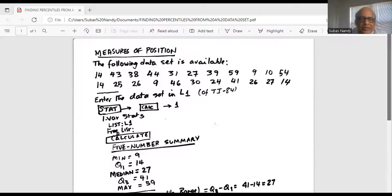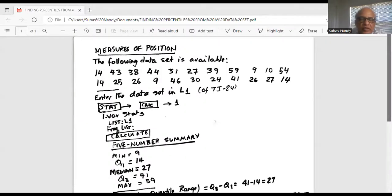This is a problem on finding measures of position in a data set. We have a set of data. There are 22 data points, so sample size n equals 22. First, we'll enter the data set in L1. The way you do that is stat 1, edit, and you enter the data set in L1. And we are using TI-84.